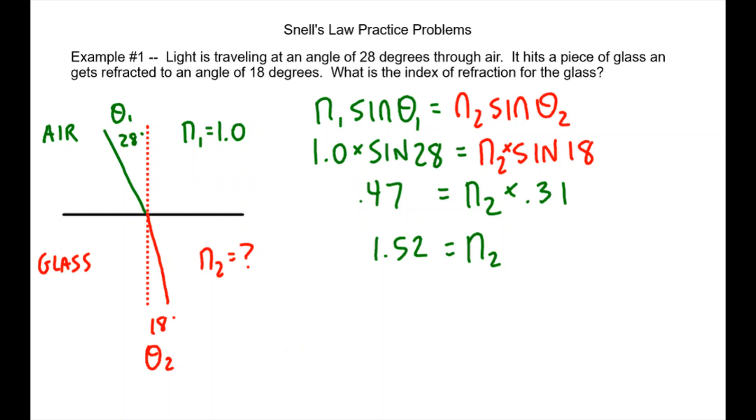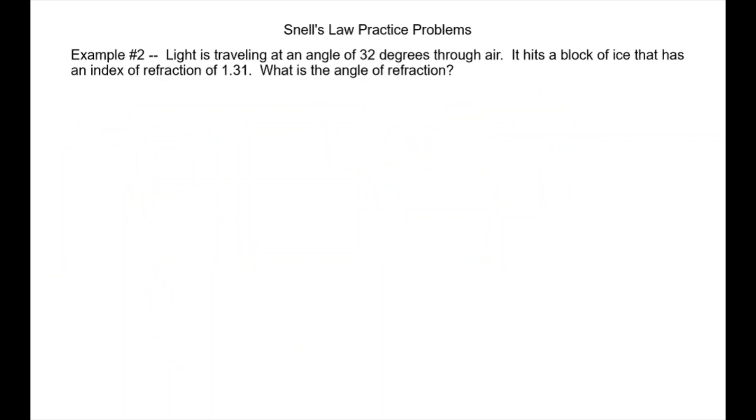All right, problem number two. It says light is traveling at an angle of 32 degrees through air. It hits a block of ice that has an index of refraction of 1.31. What is the angle of refraction? So we're looking for something a little bit different now.